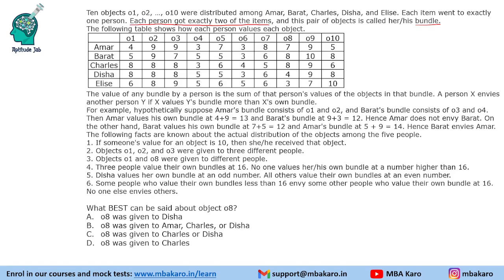The following table shows how each person values each object. The value of any bundle by a person is the sum of that person's values of the objects in that bundle. So if a person has objects valued 4 and 9, the value will be 13. If a person has 9 and 5, the value will be 14, and so on.